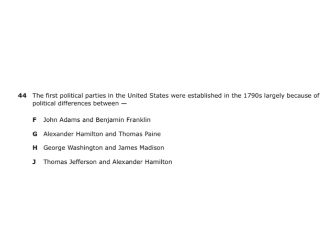The first political parties in the United States were established in the 1790s largely because of political differences between Thomas Jefferson and Alexander Hamilton. They were both cabinet members under George Washington — Hamilton wanted a national bank and the federal government to take on state debts, while Jefferson was more agrarian, believing most Americans should be farmers with less massive government power.